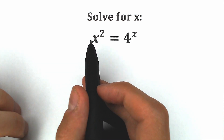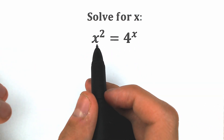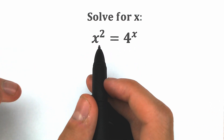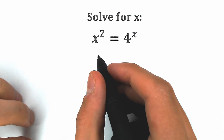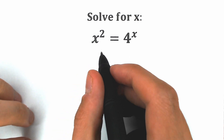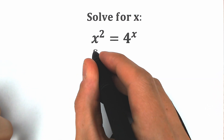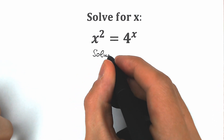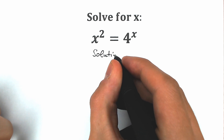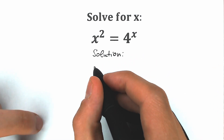So first of all, x², 4 to the x — it will be really great when we apply natural log on both sides. Let's write our solution right here and apply natural log on both sides.